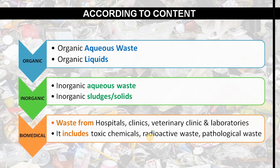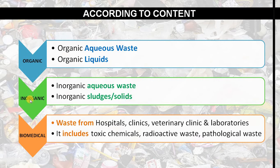Coming on to the content classification, according to content there are three kinds: first, organic waste; then inorganic hazardous waste; and biomedical waste. For organic waste there are two types — organic aqueous waste and organic liquid waste. For inorganic waste, there is inorganic aqueous waste and inorganic sludges or solids.